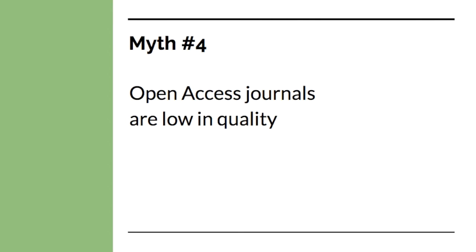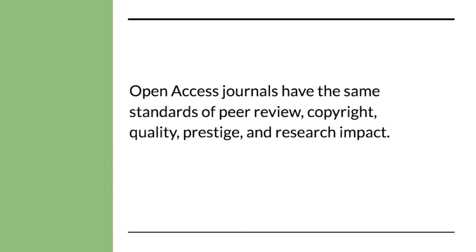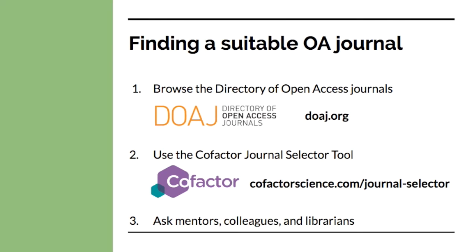The fourth myth is that open access journals are low in quality. Open access journals have the same standards of peer review, copyright, quality, prestige, and research impact. Unfortunately, there are some journals that are scams that give open access a bad reputation. If you are unsure if a journal is legitimate, verify it or contact me for help doing so. To find a suitable open access journal, you can browse the Directory of Open Access Journals at doaj.org or use the Cofactor Journal Selector tool. Mentors, colleagues, and librarians can also be a great resource for finding a suitable open access journal.